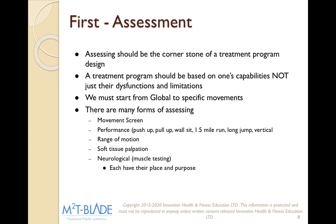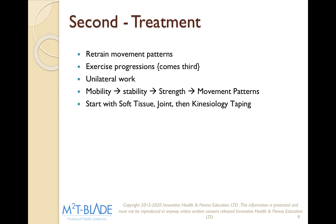First, our assessment. Assessing should be the cornerstone of any treatment program. A treatment program should be based on one's capabilities, not just dysfunctions and limitations — we want to see what a client can do and what they can't do. We want to start from global to specific movements. There are many forms of assessing: movement screen, performance, range of motion, soft tissue palpation, or neurological. Once we determine the exact areas we want to work on, we go into treatment. If a client comes in with shoulder pain, we don't just look at the shoulder — we look at the entire global movement from the thoracic spine, cervical spine, shoulder, and elbow to see why it's not moving. Then we use our tool to correctly identify those dysfunctions.